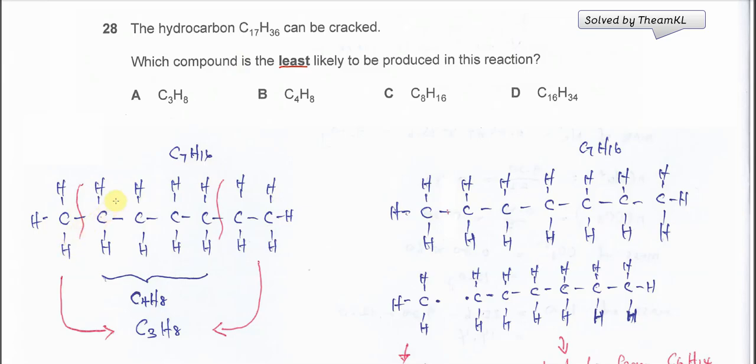We know that for hydrocarbon, it can be cracked at any part and it can form a smaller hydrocarbon. Normally it will form alkane and alkene. For example, using this one, if the heptane is being cracked, let's say here undergo bond break, here undergo bond break.